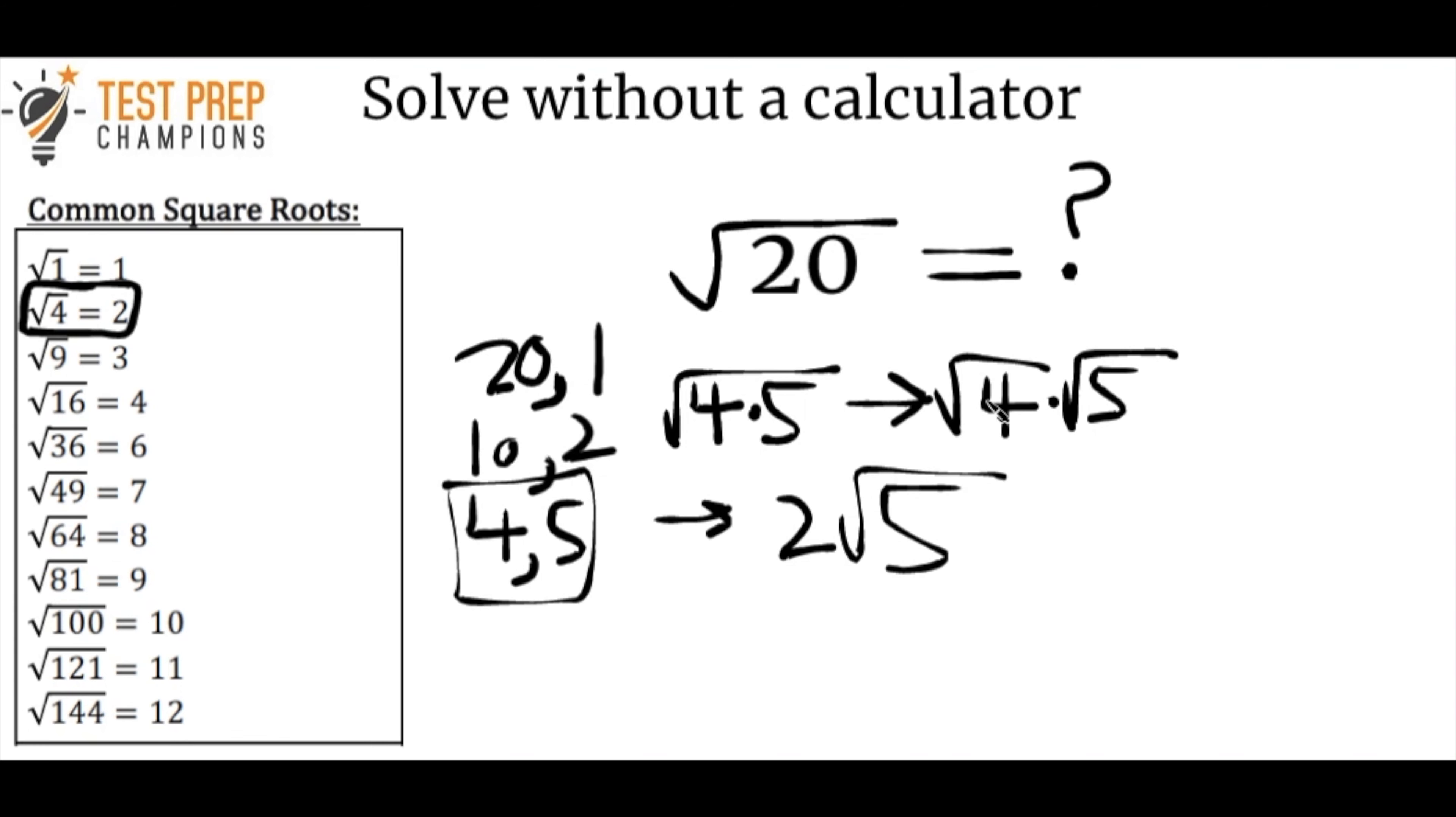So I got that because when I took the square root of 4 here, we just got that 2. So we'll leave that 2 on the outside. And since 5 is not on our list of common square roots, we just leave it as the square root of 5.